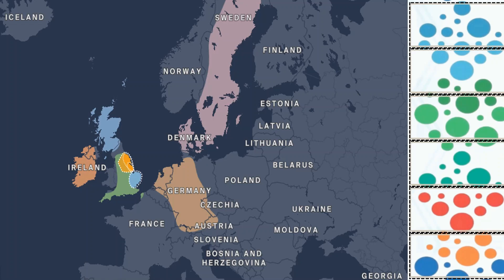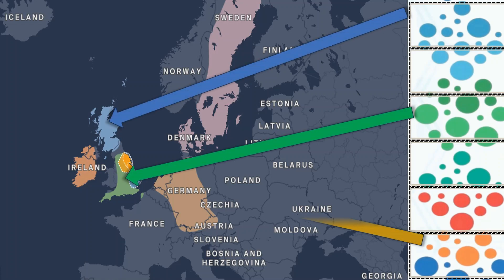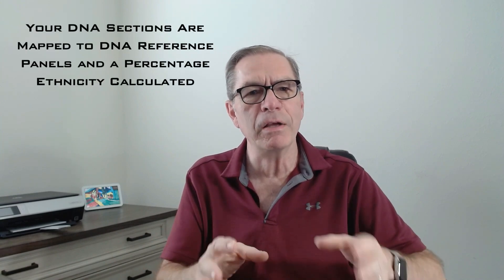Each of your thousand DNA sections are then compared to the reference panels. Your DNA sections are identified with the reference panel region they most closely resemble. So if a section most closely resembles Ireland, you'll be aligned with Ireland; if another aligns with Spain, that section will be aligned with Spain. Eventually all the matches are collated and the percentages of matches are calculated.